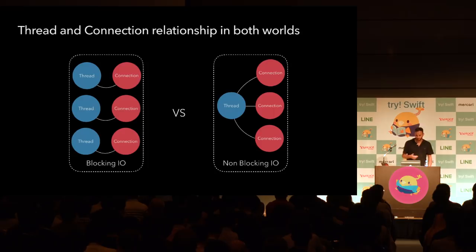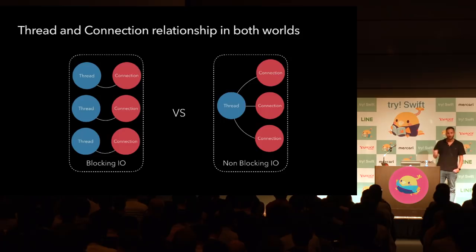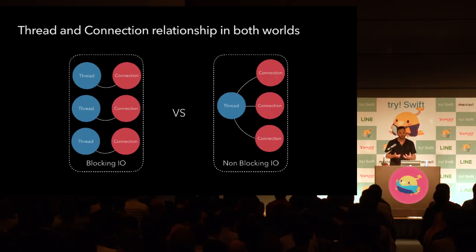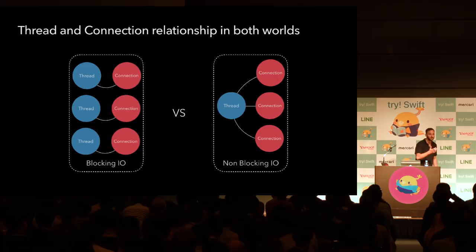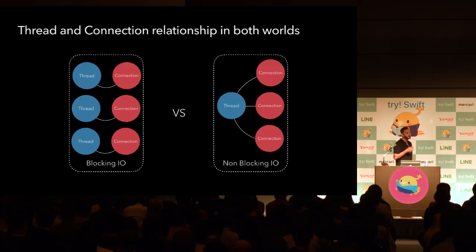Because of this, your assumption that calling a write or read function will only return once something real has happened — like getting data — is no longer true. This makes writing code a lot more complex. The question is: what justifies all this complexity? To understand why we accept this trade-off, it's important to know that high-scaling systems can have hundreds of thousands of concurrent connections terminated per box or even more.